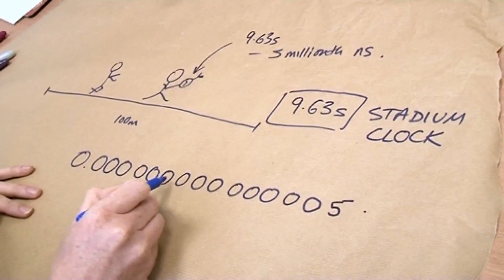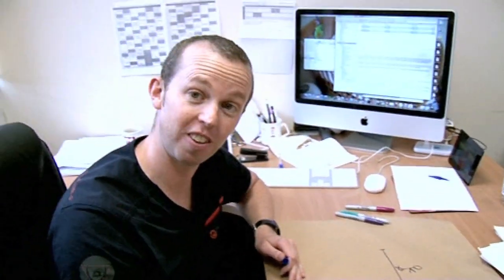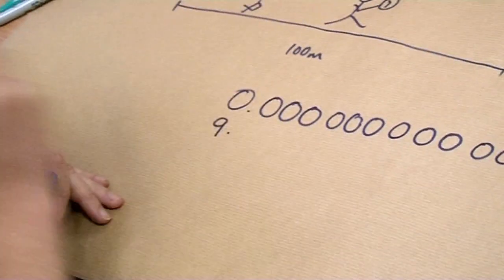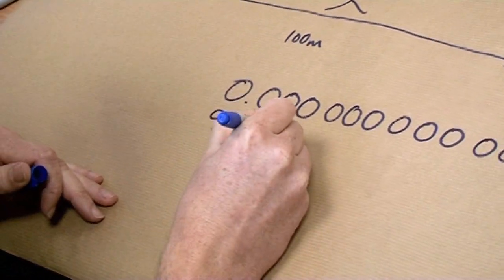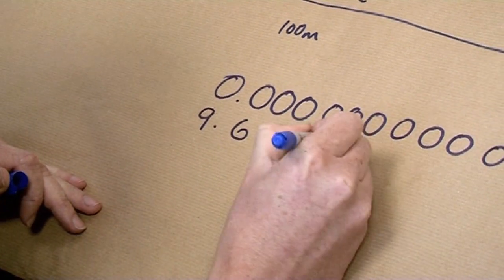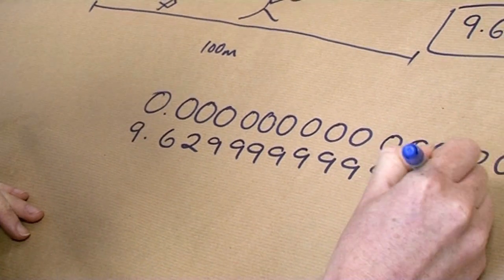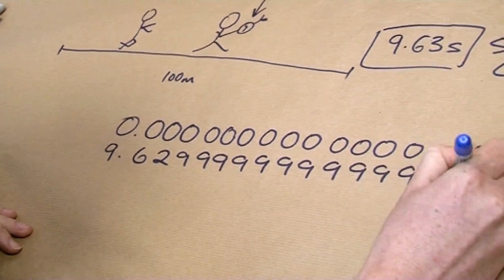We've now got 12, 15, about 15, but I want 5, 4, 5, 6, 7, 8, 9. So, Usain Bolt, if you actually looked at his watch, it would have read 9.62999999999999995.